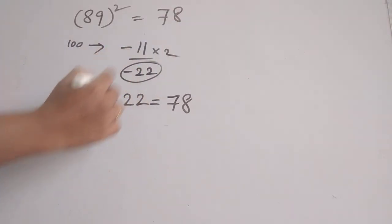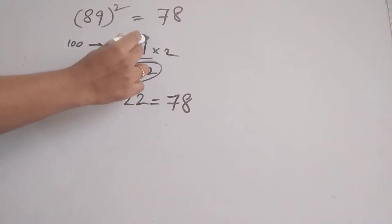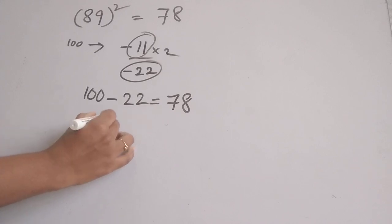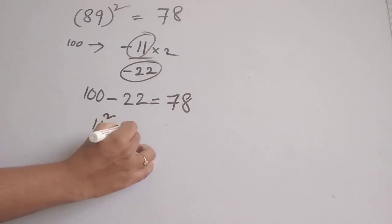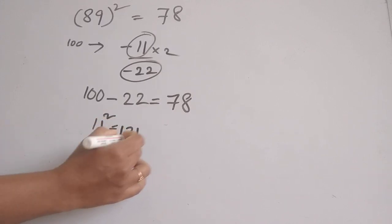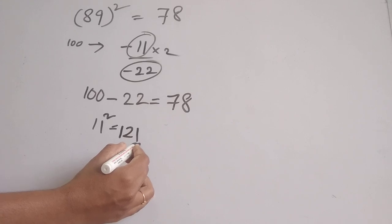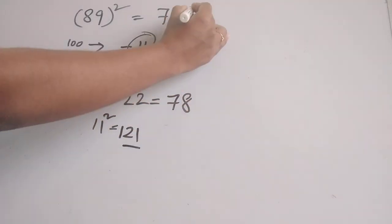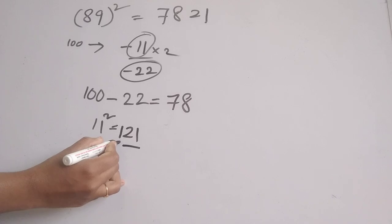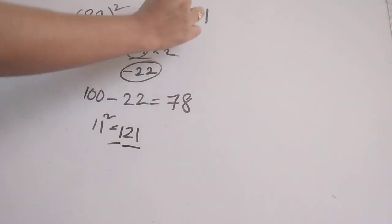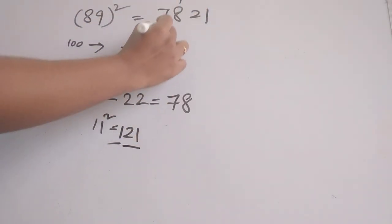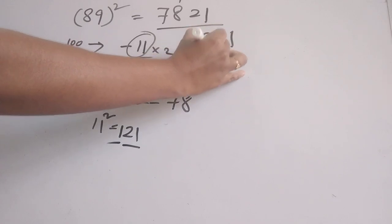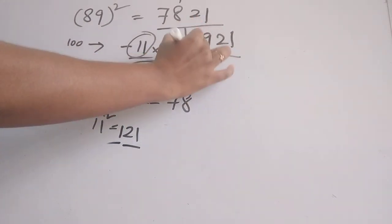Now, the square of 11 is 121. For this 121, we write 21 here and take the 1 as a carry. Adding the carry to 78 gives us 79. The answer — 89 squared — is 7921.